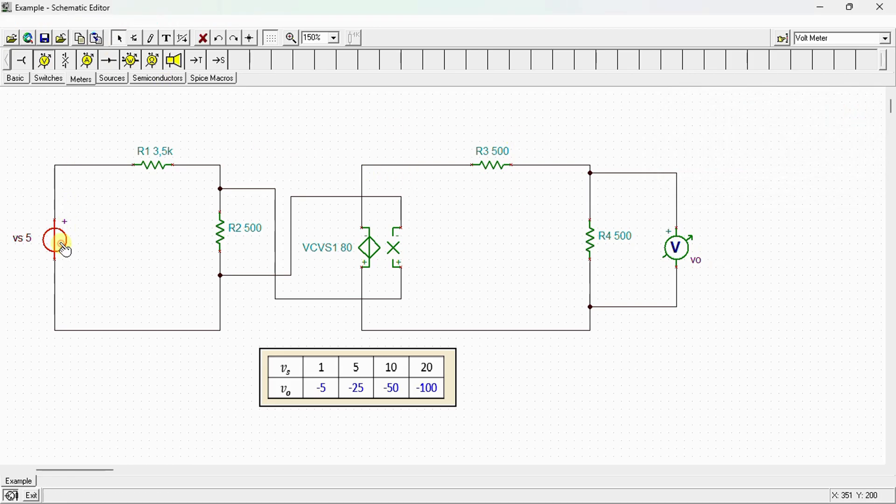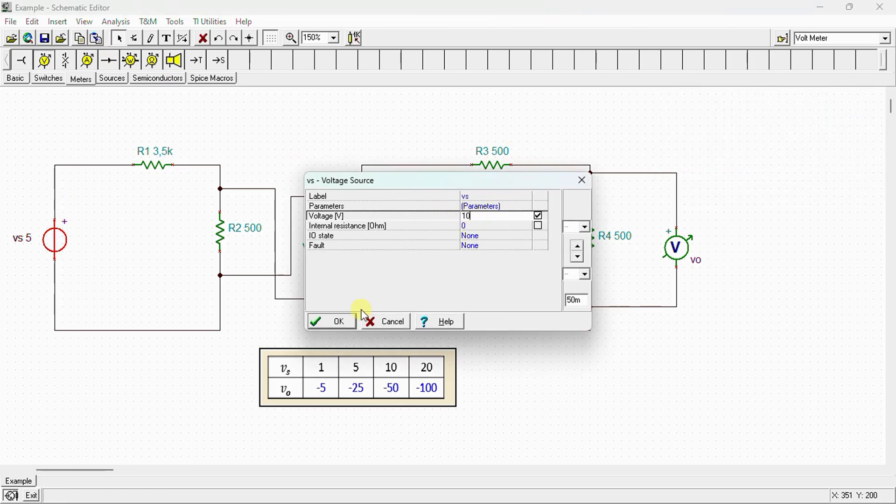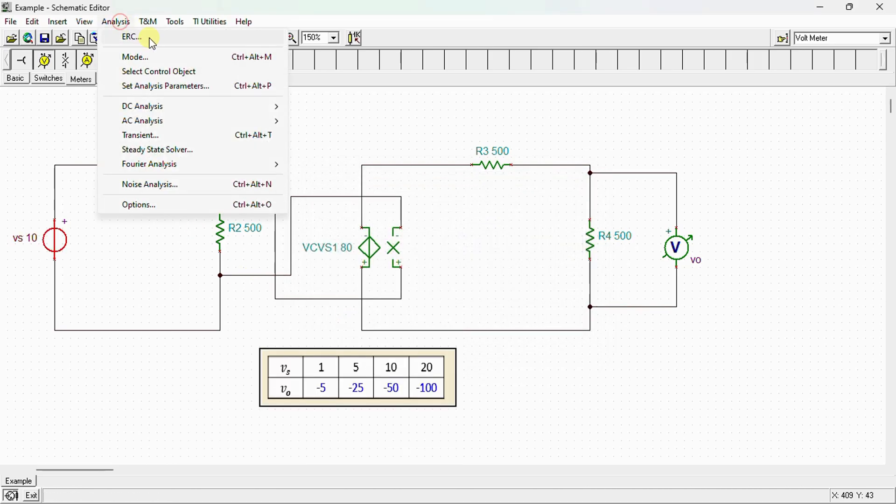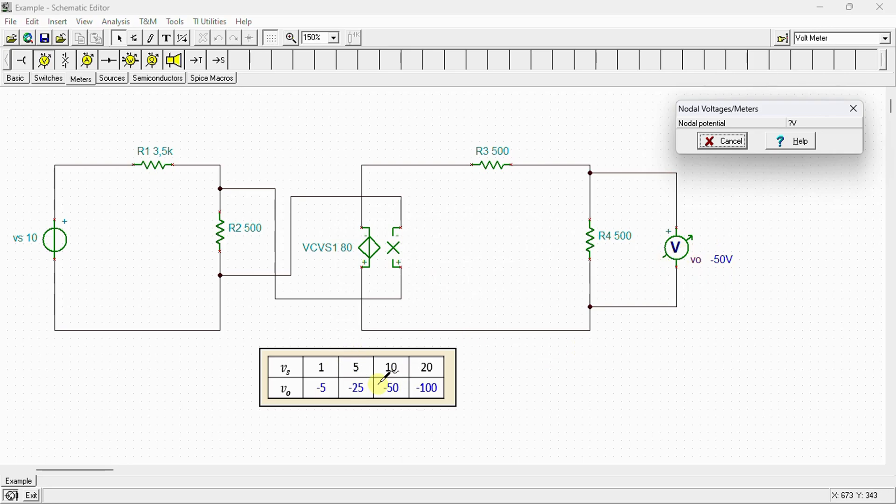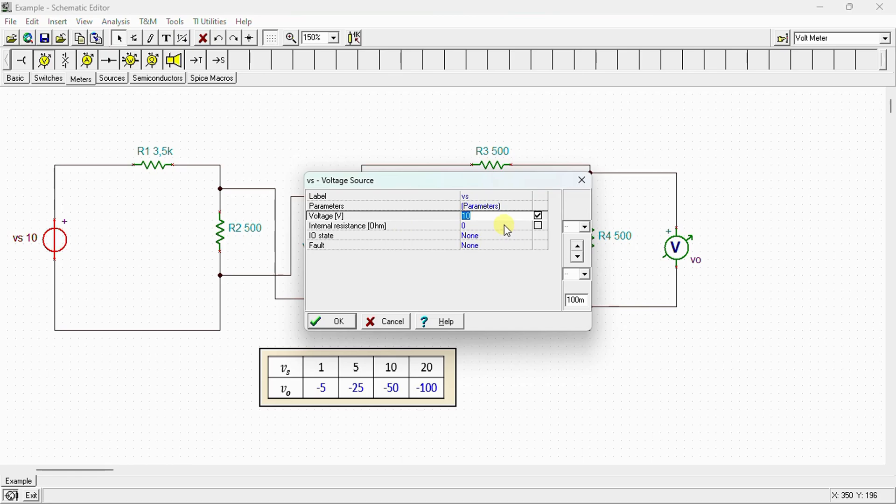when vs = 10V, we can see that vo = -50V. And for the last one, when vs = 20V,